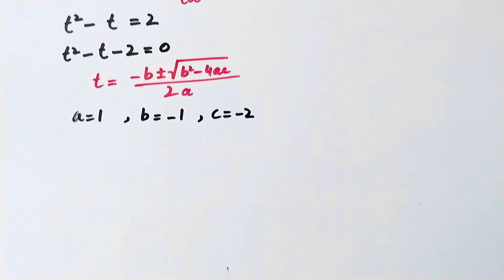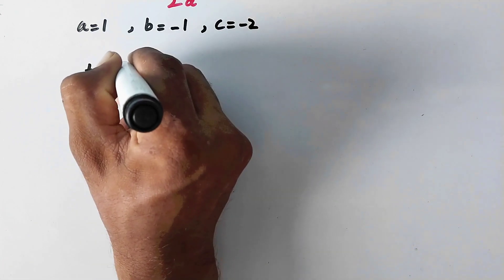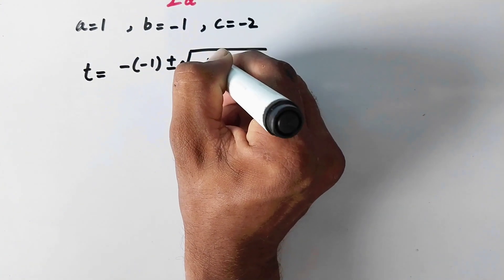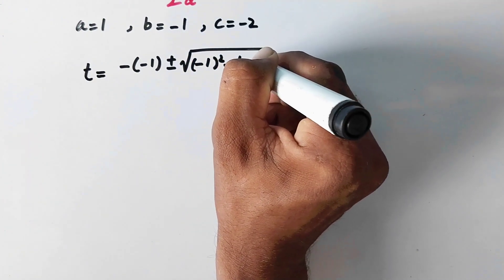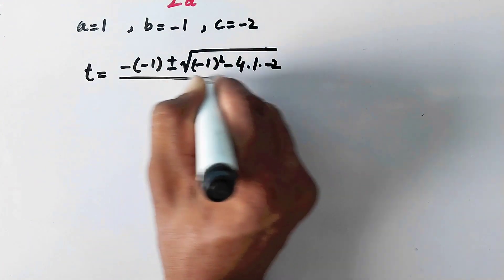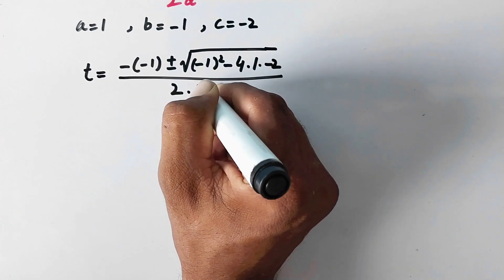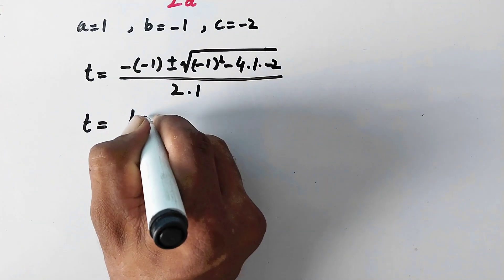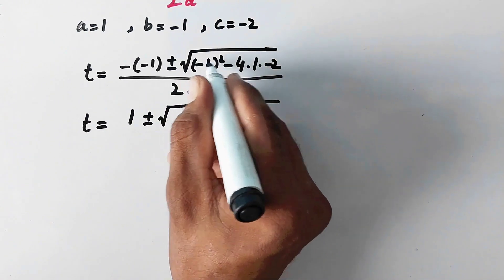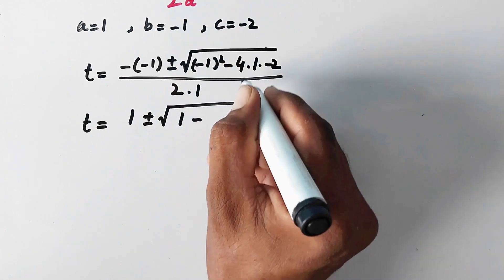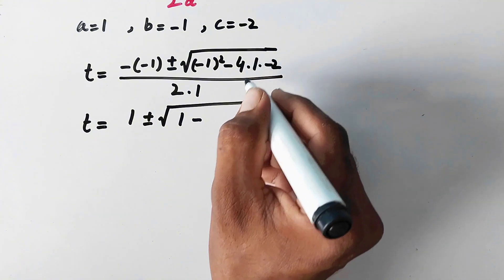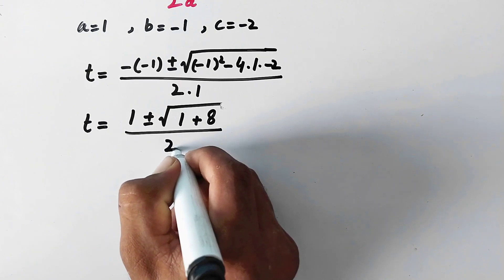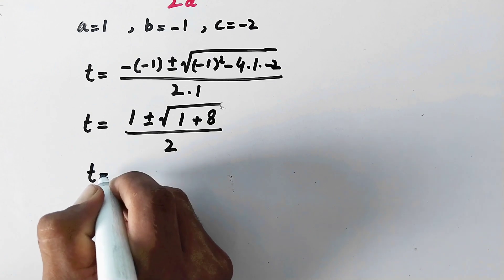So we write t equals minus of minus 1, plus or minus square root of minus 1 squared minus 4 times 1 times minus 2, all divided by 2 times 1. This becomes t equals positive 1 plus or minus square root of positive 1 minus 4 times minus 2 times 1, which gives positive 8, divided by 2.